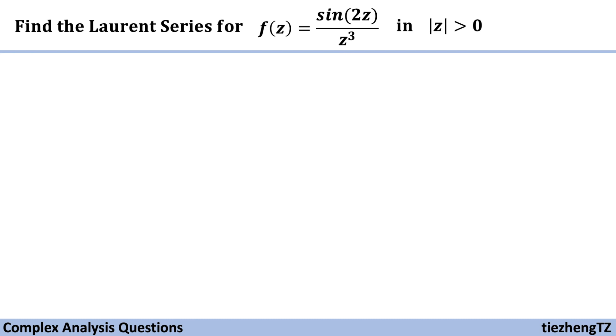So when we see this function, we see sine 2z. So we know we are going to use this given format to find the Laurent series. But in this given equation, we have 2z. So we know 2z is also larger than zero, which is also less than infinite. So we can just use this format.